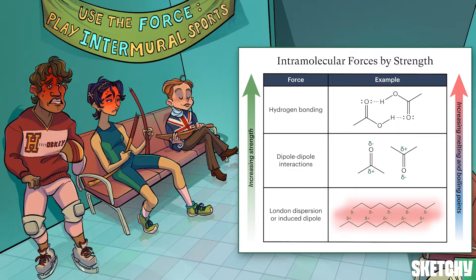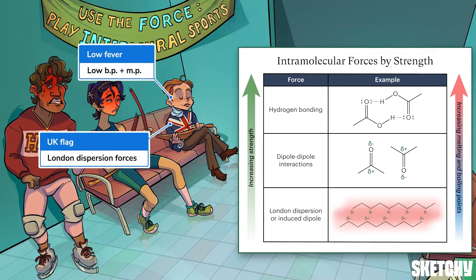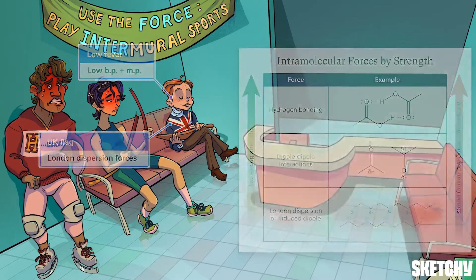This cricket player is sporting a union jack to remind you of London dispersion forces. These are the weak interactions when one molecule with little or no dipole of its own induces a temporary dipole in another molecule. Our cricketeer is slouching to represent the relative weakness of London dispersion forces, and he's not running a fever at all, since molecules with only London dispersion forces have the lowest boiling and melting points.